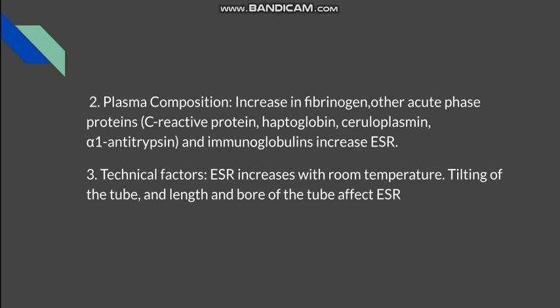Secondly, plasma composition: if there is an increase in fibrinogen or any other acute phase reactants, this leads to increased stickiness of red blood cells, causing them to fall at a greater rate. So increase in fibrinogen, C-reactive protein, and haptoglobin — these also change the zeta potential, the negative potential of the red blood cells — mostly increase the ESR. Lastly, technical factors: room temperature, tilting of the tube, length of the tube, and bore of the tube all influence the ESR. We should try to minimize technical errors.